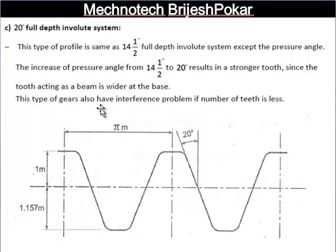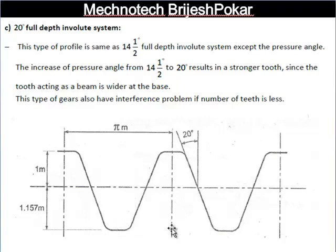The third type is the 20 degree full depth involute system. Here, the pressure angle increases from 14.5 to 20 degrees. Because of this 20 degree angle, the base area is wider, which gives better strength. However, this type of gear also has an interference problem if the number of teeth is less.